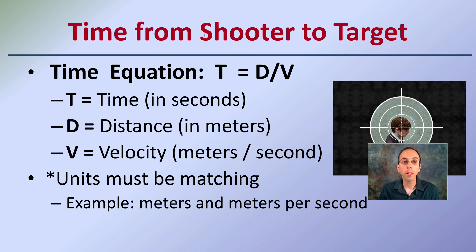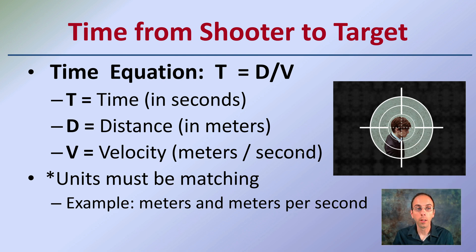So starting with time from the shooter to the target. The time equation is T equals D over V. Or time, which is represented by T in seconds, equals distance D in meters over velocity in meters per second. Keep in mind that the units must be matching. So in this example, the distance was measured in meters, so the velocity was in meters per second. And that allows us then to be able to calculate the time.